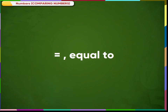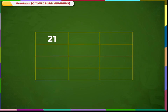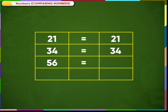We use this symbol for equal to. 21 is equal to 21. 34 is equal to 34. 56 is equal to 56. 74 is equal to 74.